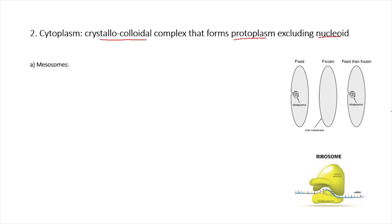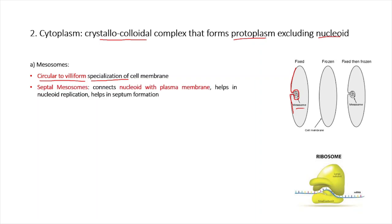Cytoplasm consists of mainly three components. First are mesosomes, which are circular or villiform specializations of the plasma membrane that protrude into the cytoplasm. Mesosomes are of two types. Septal mesosomes connect the nucleoid with the plasma membrane and help in nuclear replication and septum formation during cell division.